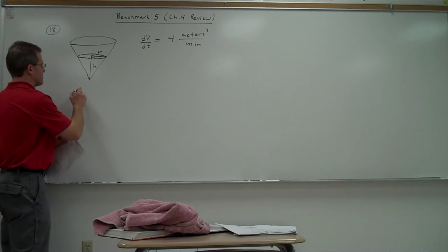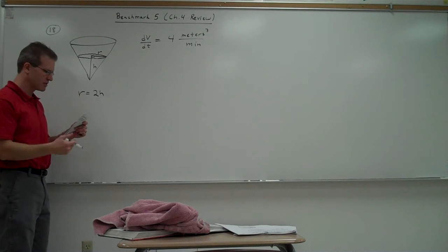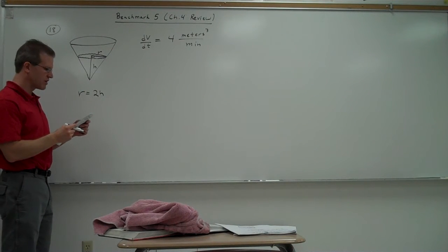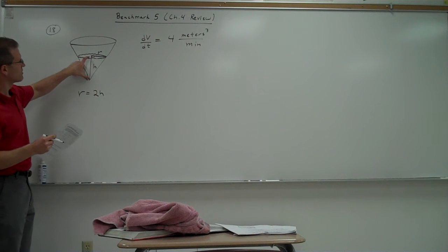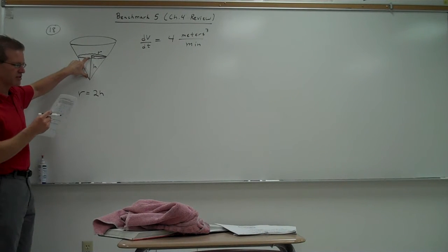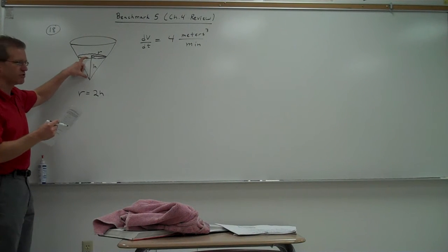The radius is twice the height. So r equals 2h. Radius is twice the height of the cone. How fast is the water level rising? So we want to know how fast h is rising. How fast h is changing. So what are we trying to find, actually? dh over dt. Good. And you want to know how fast it's rising when the water is 2 meters deep, so when h equals 2 meters.